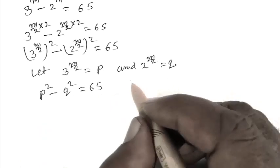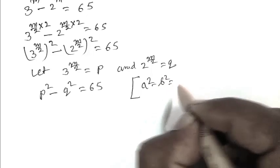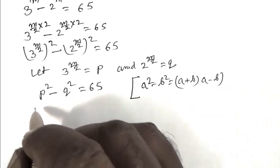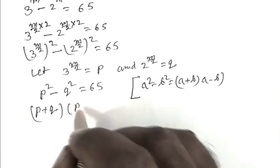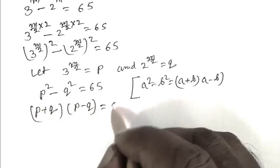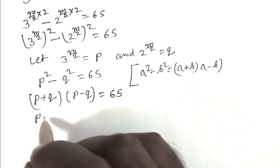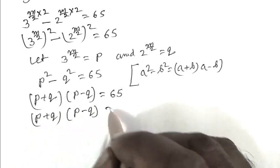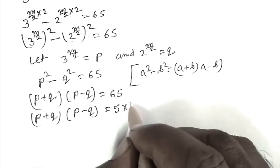Here we are applying the formula a squared minus b squared equals a plus b times a minus b. So p plus q times p minus q equals 65, which equals 5 times 13.